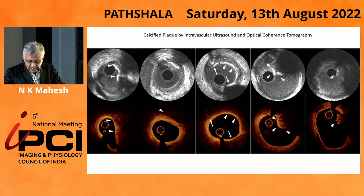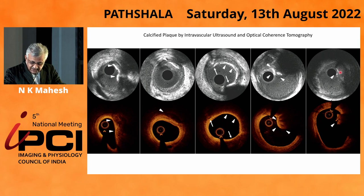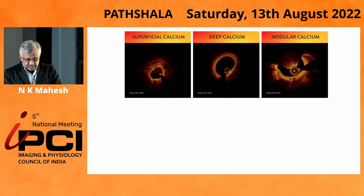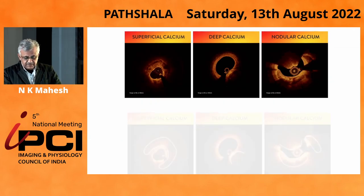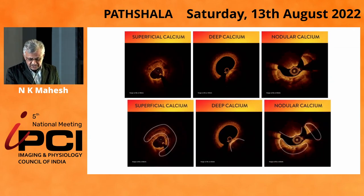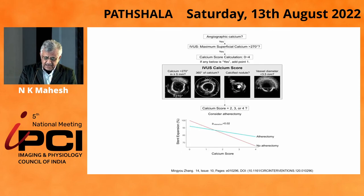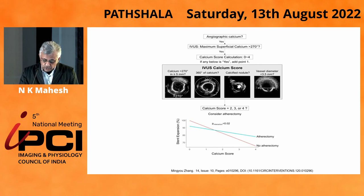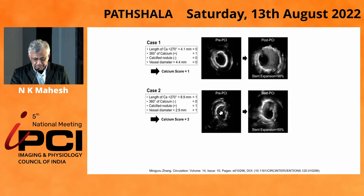There is an important point: a calcific nodule can look like a thrombus in OCT, but it is actually a calcified nodule, which is well differentiated in IVUS. This is where IVUS scores over OCT. Regarding calcium distribution, you have superficial, deep, and nodular calcium. One additional point has been given to the calcific nodule because of its significance.